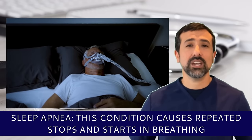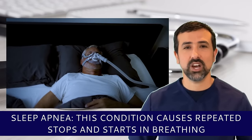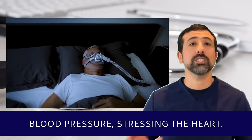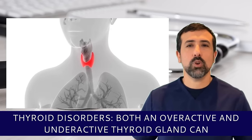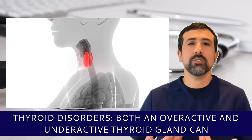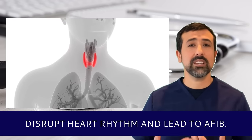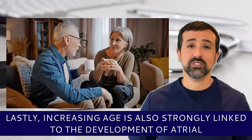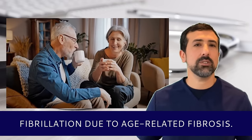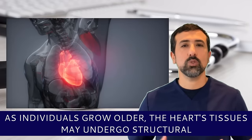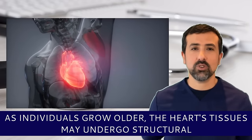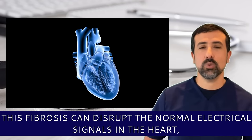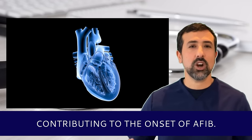Number three: sleep apnea. This condition causes repeated stops and starts in breathing during sleep, leading to sudden drops in oxygen levels and increased blood pressure, stressing the heart. Number four: thyroid disorders. Both an overactive and underactive thyroid gland can disrupt heart rhythm and lead to AFib. Number five: advanced age is also strongly linked to the development of atrial fibrillation due to age-related fibrosis. As individuals grow older, the heart's tissues may undergo structural changes, leading to fibrosis in the atria, which can disrupt normal electrical signals and contribute to the onset of AFib.